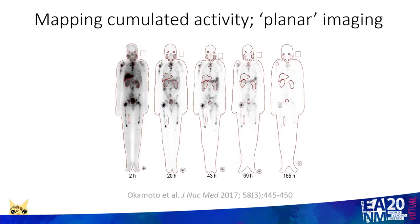Planar imaging — using images from the front and the back to determine the radiation absorbed dose in the kidneys — is likely to be affected by the overlying bowel, which as we know also expresses PSMA. Assessing radiation dose in salivary tissues is likely to be affected by overlying tumour in front or behind, or in bone, which is a common site of metastasis from prostate cancer.